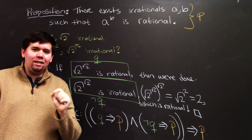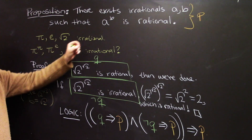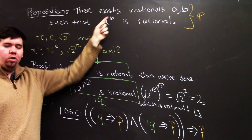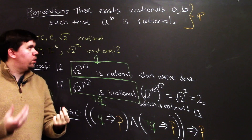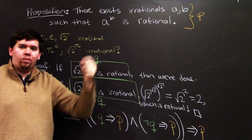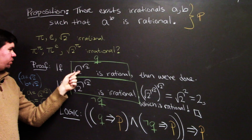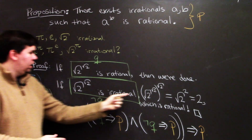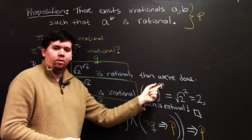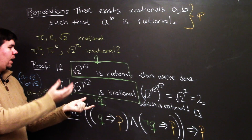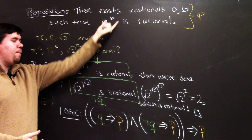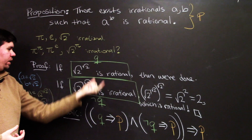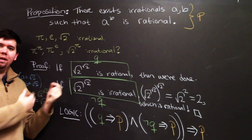Notice what we didn't actually do. I said there exist irrationals a and b such that a to the b is rational, but I never told you which specific a and b they are. We have candidates: possibly it's √2^√2, or possibly it's (√2^√2)^√2. We weren't able to decide. We don't actually have a confirmed example — and yet we know the statement is true, because we know one of these two cases must be an example.